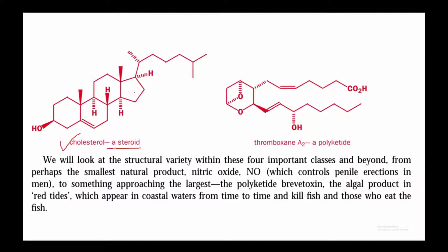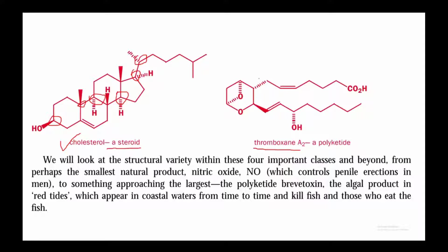Here is an example of a steroid class natural product: cholesterol. If you look at the structure of cholesterol, it contains four rings — three six-membered rings — and a side chain. It contains several stereogenic centers, which you can see marked here. There is also a double bond in cholesterol. Thromboxane is a polyketide and a chiral molecule — it is the natural product responsible for clotting blood so we do not bleed to death.